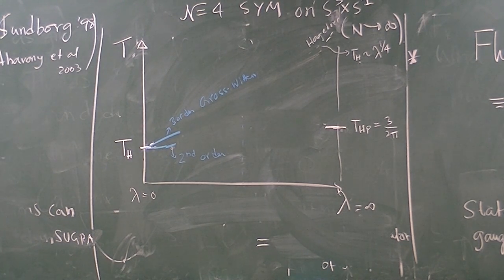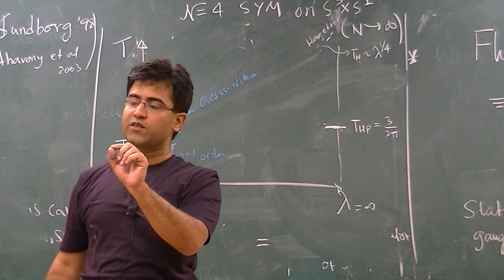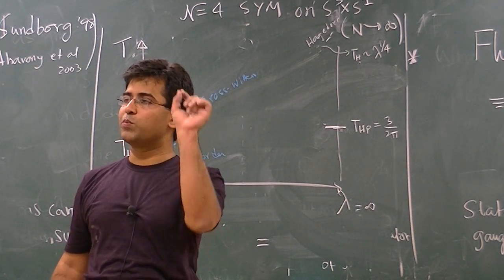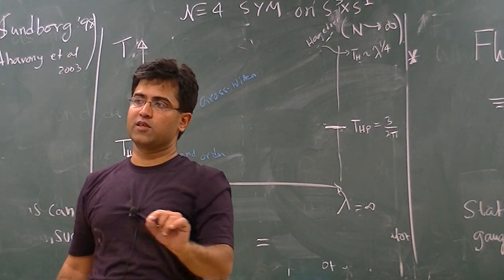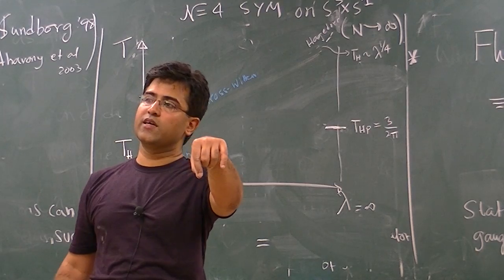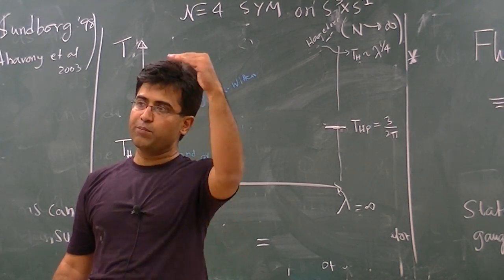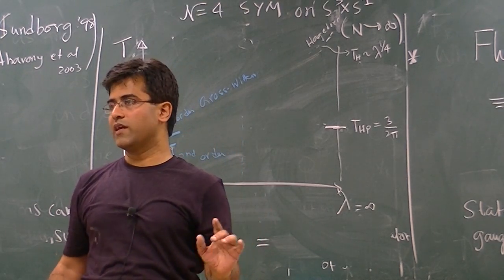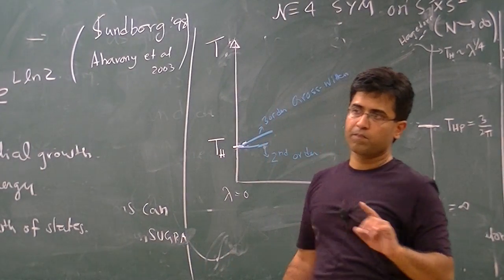So like I said, the Hagedorn phase transition, it's not really a phase transition. Because it's an effect that you see when you sit in this, I don't know what to call it, the superheated phase. You're sitting in the metastable vacuum, which is not the one dominating the ensemble. So you force yourself to sit there, you will find that that vacuum undergoes at high temperatures a second-order transition. It merges with another saddle point.